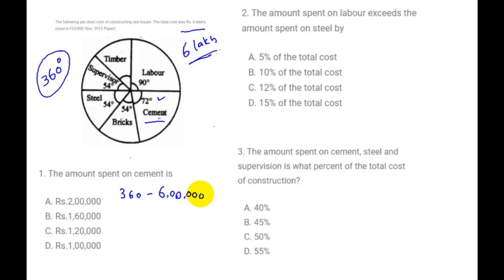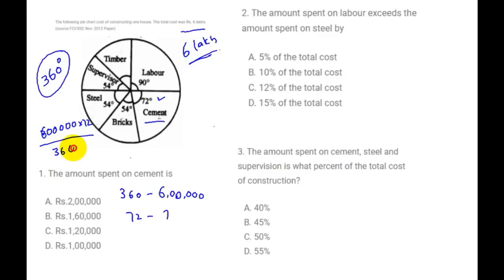So here we have 72 degrees for cement. We do cross multiplication: 6 lakhs into 72 divided by 360. The zeros get cancelled — 36 into 2 equals 72, so 6 into 2 is 12. That gives us 1 lakh 20,000. Option C is correct — 1 lakh 20,000 is the answer.